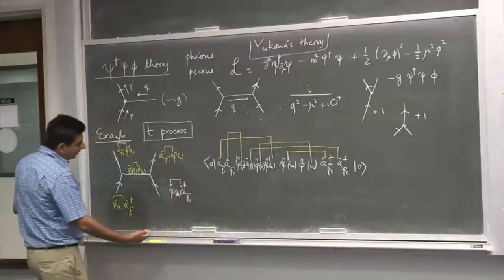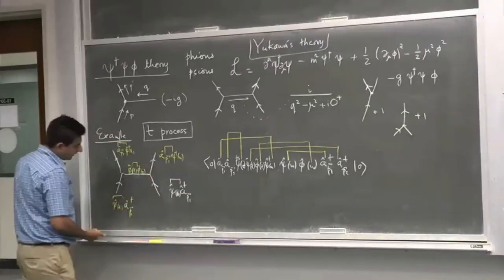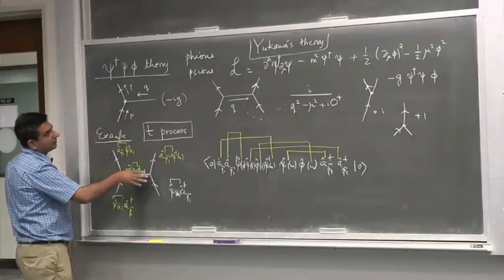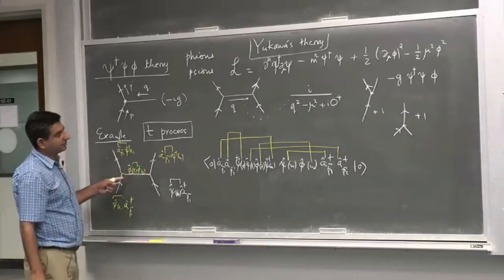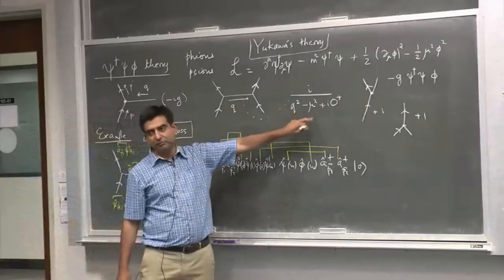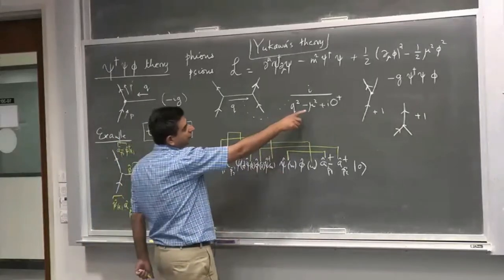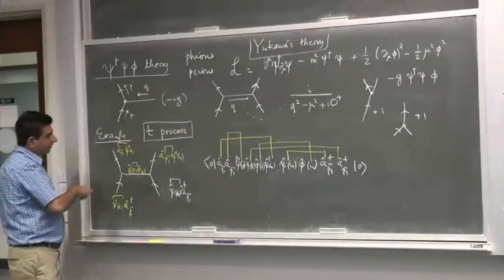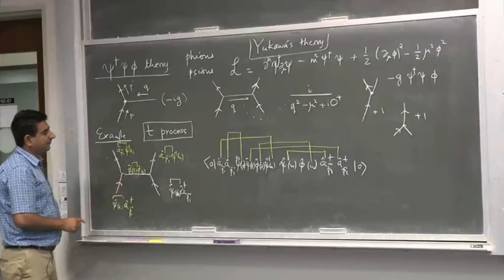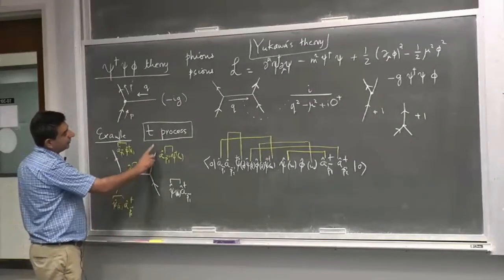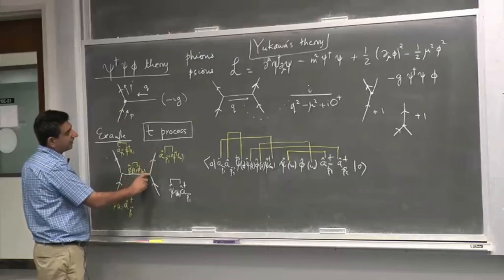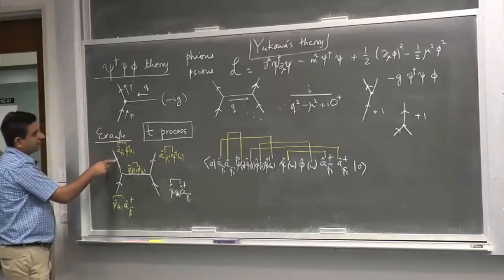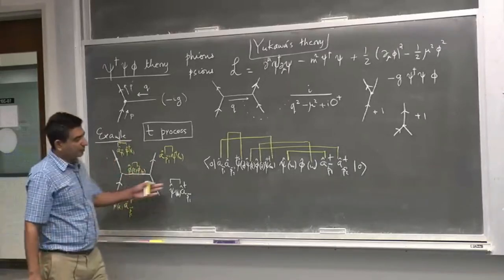So we have a ψ-on particle coming in, another particle coming in. They interact through the exchange of a virtual particle of momentum q and mass μ. It is off-shell because q² ≠ μ². This is a φ-on virtual particle. There is an outgoing line corresponding to the annihilation of a particle of momentum p₁ and another of momentum p₂.